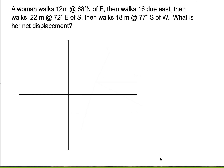Here's our problem. I'm going to draw these vectors out. She's walking 12 meters 68 degrees north of east. What that means is that I'm pointing east and I'm going to turn 68 degrees north of that. So that represents 12 meters at 68 degrees north of east, and the 68 degrees goes in here.